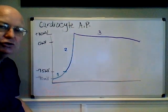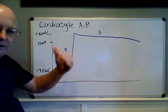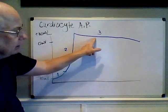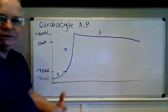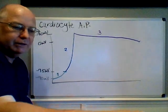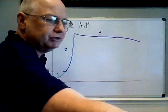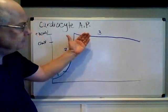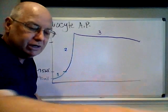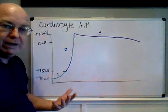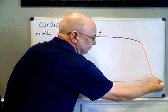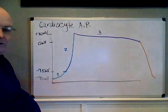The plateau phase is due to calcium ions entering the cell at the same time potassium is exiting, almost perfectly counterbalancing each other. At some point the calcium channels close, or the calcium gets bound up, depending on which book you read. Eventually the free calcium stops entering the cell, the potassium channels remain open, and that's what gets us to the repolarization phase — all the way back down to minus 90 millivolts.